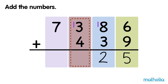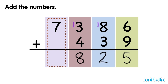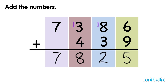Add the hundreds. 1 hundred plus 3 hundreds plus 4 hundreds equals 8 hundreds. Finally, add the thousands. 7000 plus 0 equals 7000. So 7386 plus 439 equals 7825.